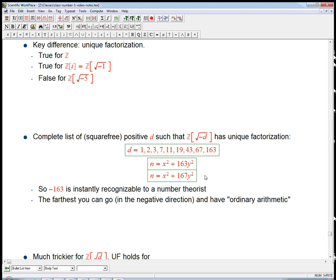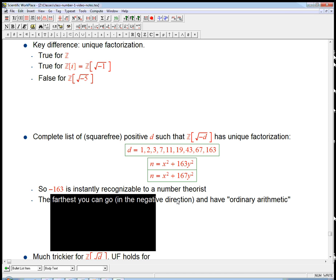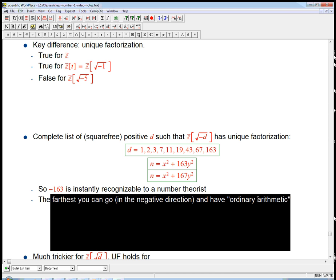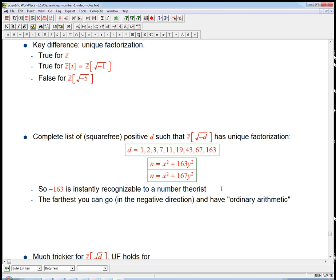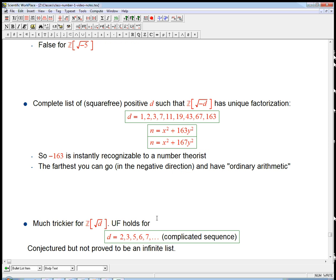So basically in the negative direction, if you have this be positive, and therefore what you end up adjoining is the square root of a negative number, this is the farthest you can go, minus 163, and have something like ordinary arithmetic holding and not have to do a lot more work.